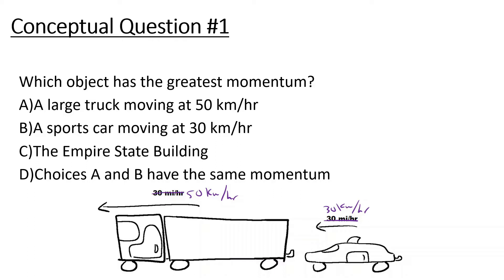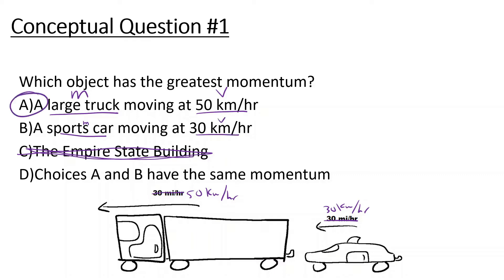We should think about the mass and the velocity. The Empire State Building, even though it has a lot of mass, doesn't move at all — its velocity is zero, so its momentum is zero. The large truck has a lot of mass and is going fast, while the sports car has only a small mass and is going slower. So A has more momentum because it has more mass and more velocity.